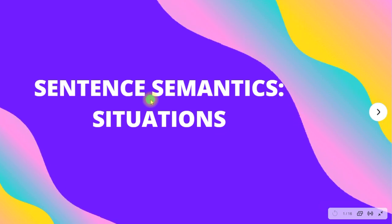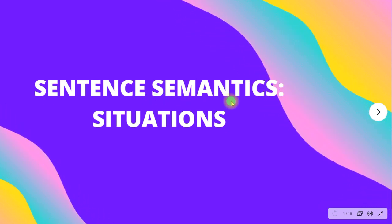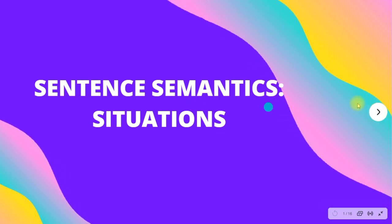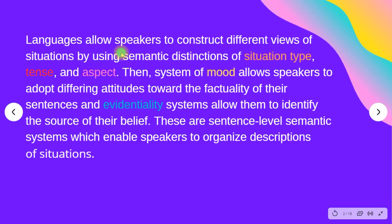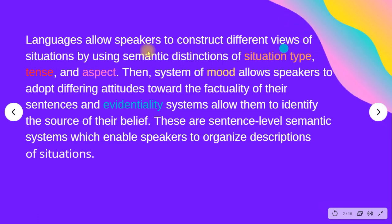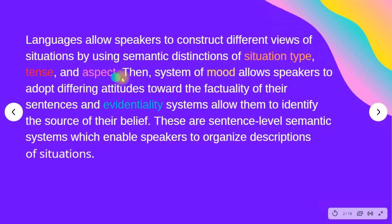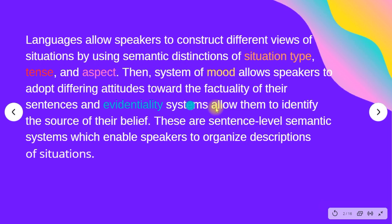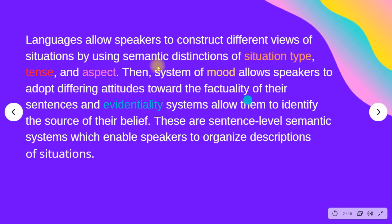The topic for this video is sentence semantics situations. Languages allow speakers to construct different views of situations using semantic distinctions of situation by tense and aspect. The system of mood allows speakers to adopt differing attitudes toward the factuality of their sentences, and evidentiality systems allow them to identify the source of their belief. These are the sentence-level semantic systems that enable speakers to organize descriptions of situations.